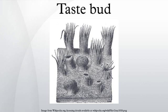The supporting cells are mostly arranged like the staves of a cask and form an outer envelope for the bud. Some, however, are found in the interior of the bud between the gustatory cells. The gustatory cells, a chemoreceptor, occupy the central portion of the bud. They are spindle-shaped, and each possesses a large spherical nucleus near the middle of the cell. The peripheral end of the cell terminates at the gustatory pore in a fine hair filament called the gustatory hair. The central process passes toward the deep extremity of the bud and ends in single or bifurcated varicosities. The nerve fibrils, after losing their medullary sheaths, enter the taste bud and end in fine extremities between the gustatory cells.